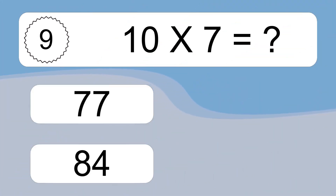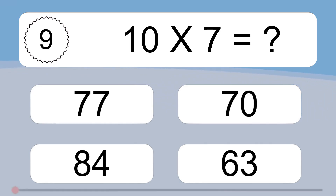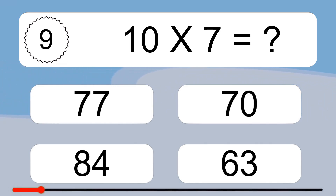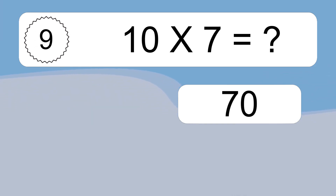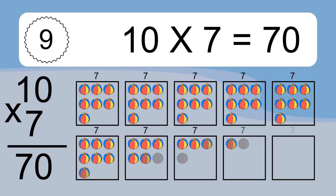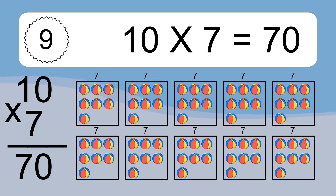10 times 7 equals what? 10 times 7 equals 70. We have 10 boxes, and each box has 7 colorful balls inside. If you count all the balls in all the boxes together, you will have 10 times 7 balls. This equals 70 balls.